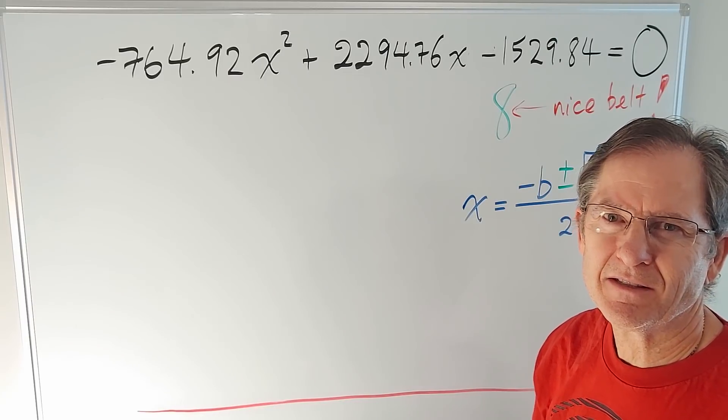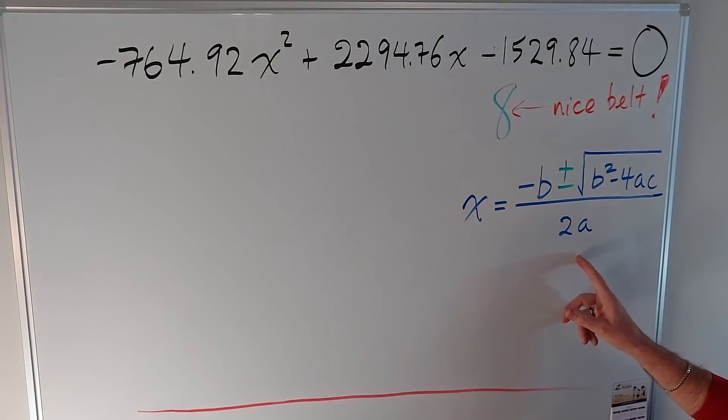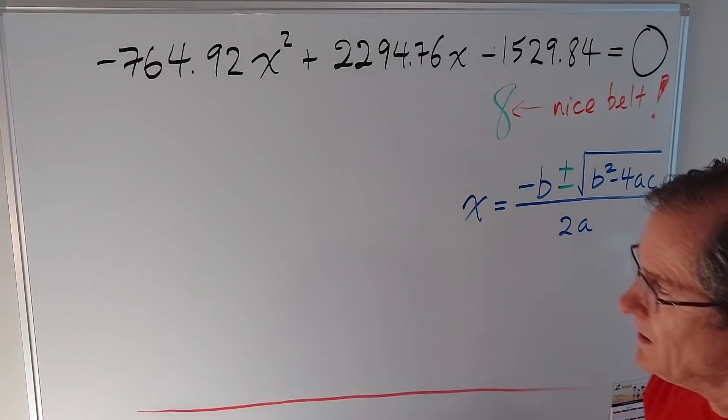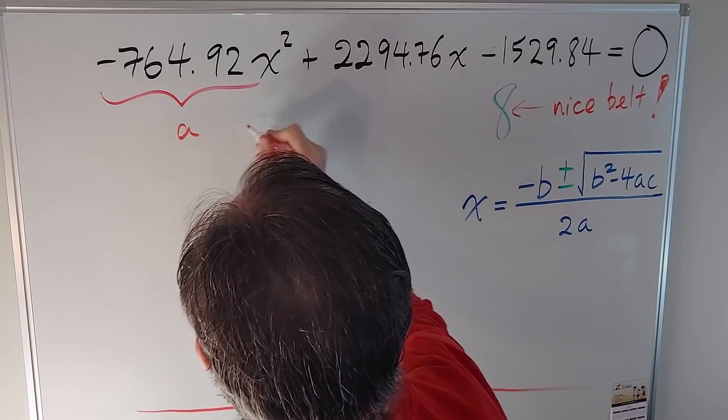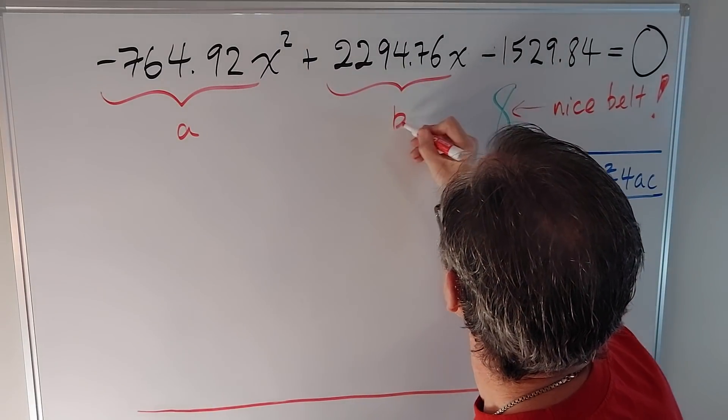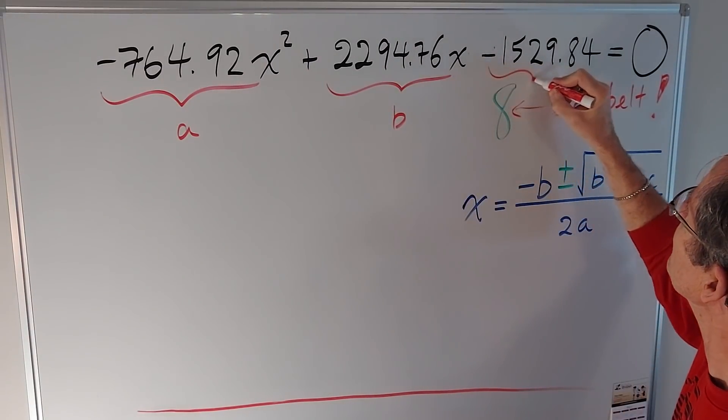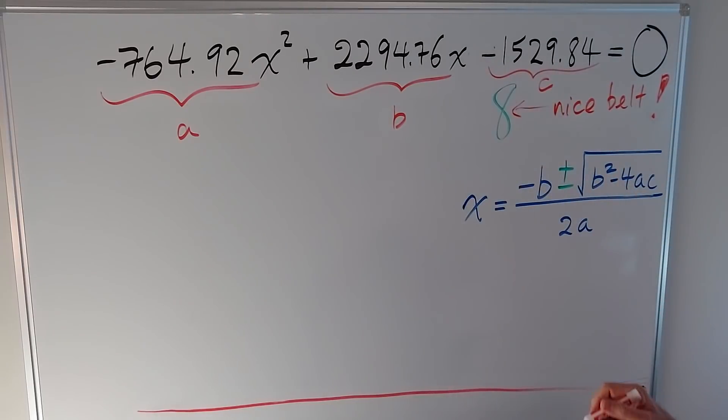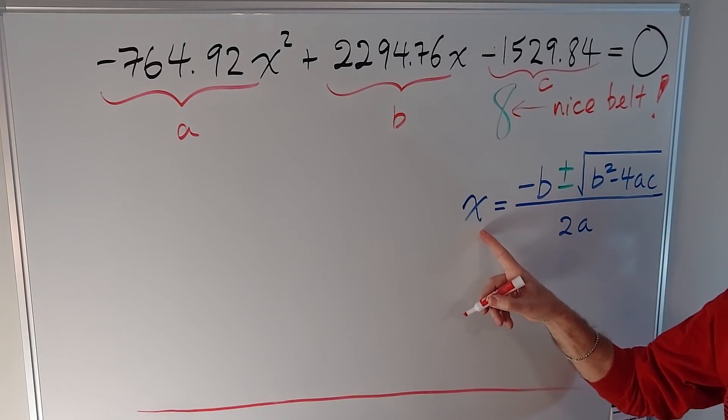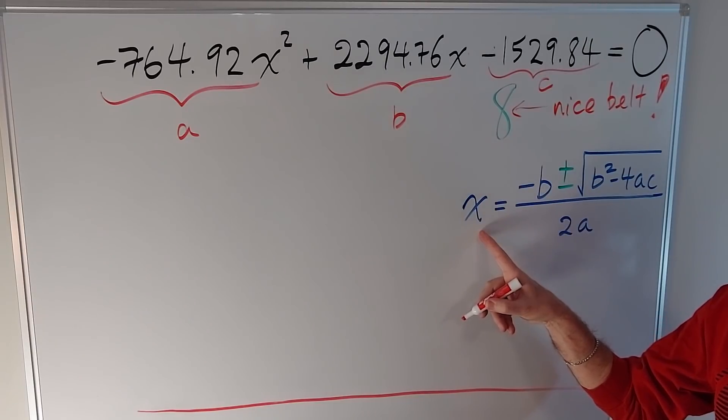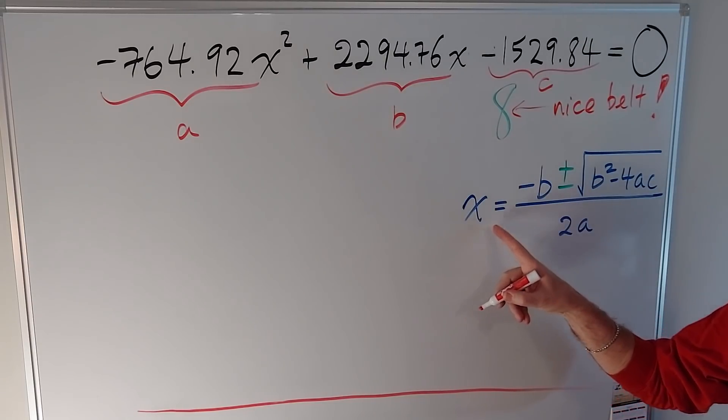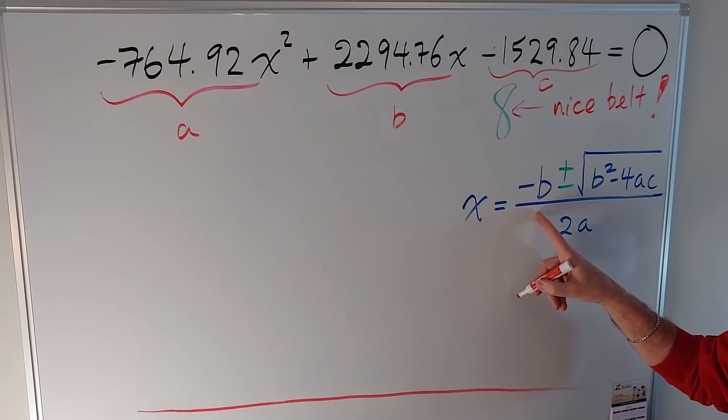The lazy man's method is to use the quadratic formula, which you probably have seen before. If we define this number to be a, this number to be b, and this number to be c, then the solutions to that equation, of which there might be 2, 1, or even none, is given by x equals negative b plus or minus the square root of b squared minus 4ac over 2a.